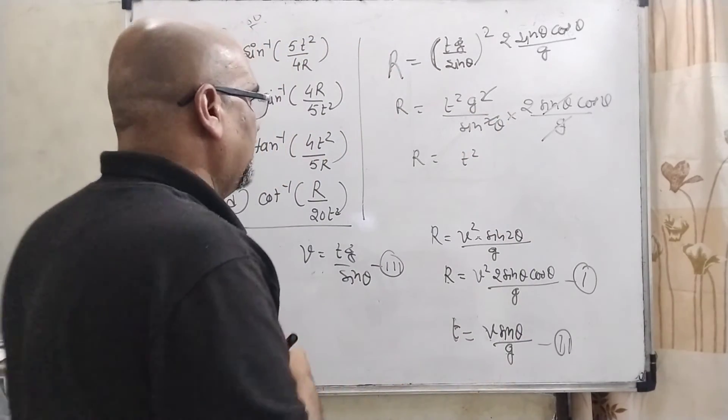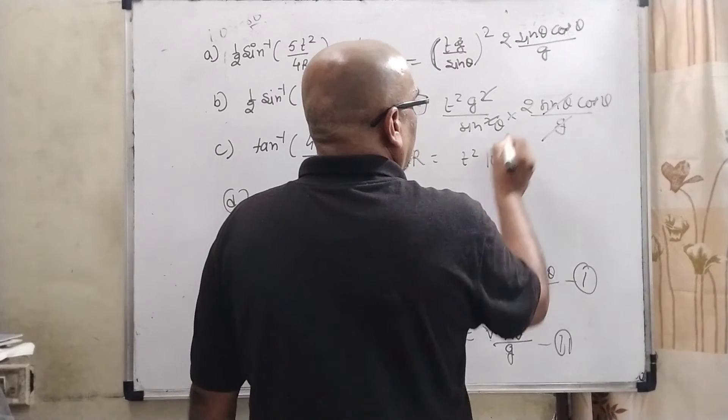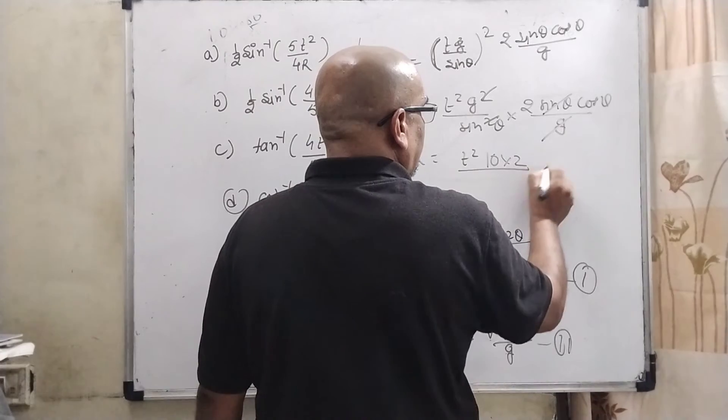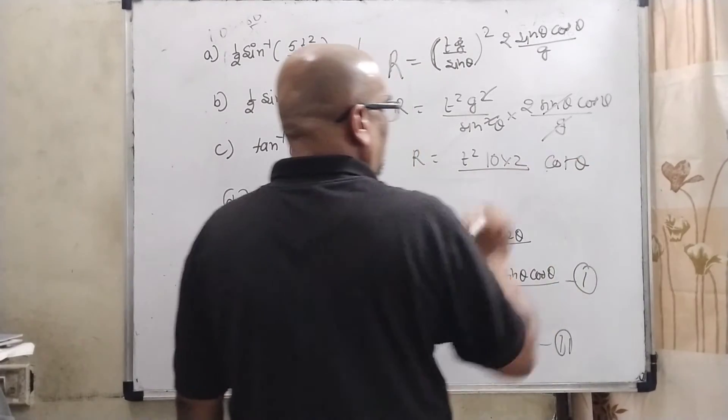And t² remains as it is. What is the value of g? It is already given as 10. It is 2. Here cos θ / sin θ becomes cot θ.